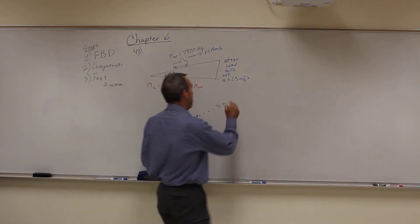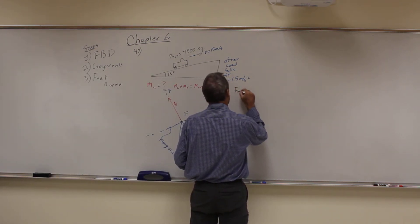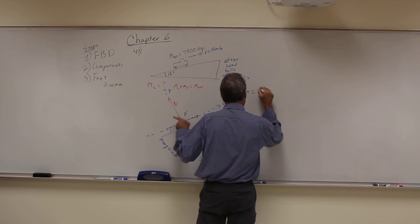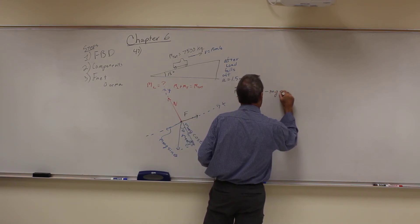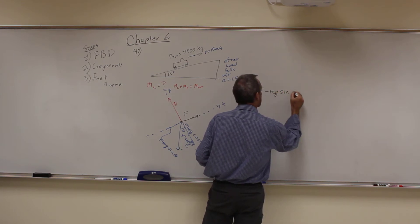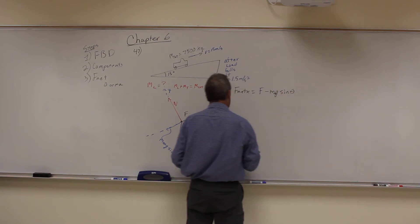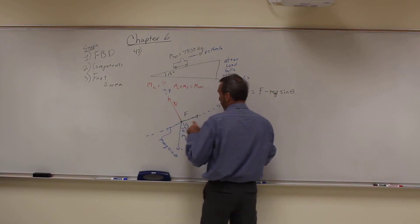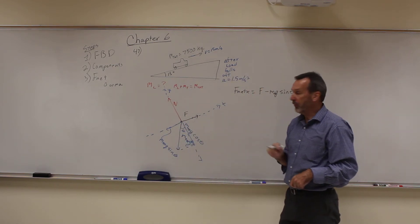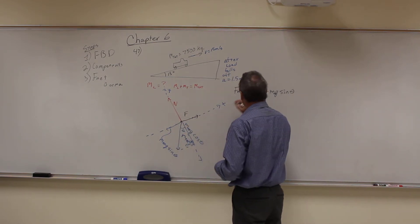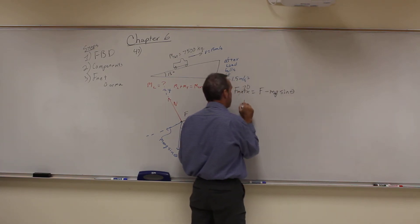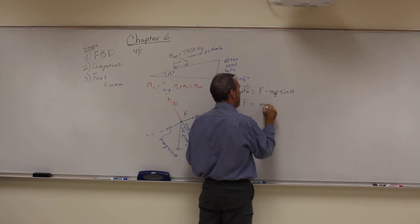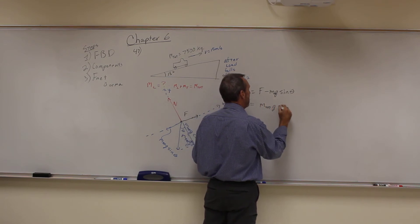So what we're going to do is F net x. And it's going to be the force applied by the engine minus m total g sine theta. And those are the only two forces in the x direction. So if those are the only two forces in the x direction, they have to be equal to each other. And since it's constant velocity, that's equal to zero.